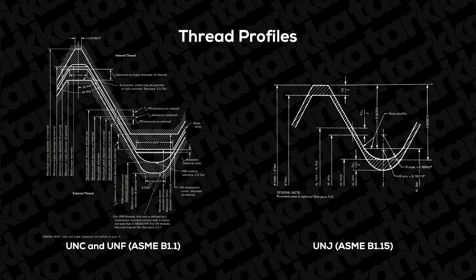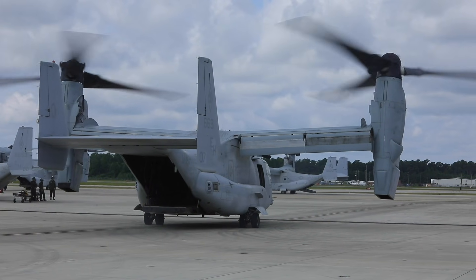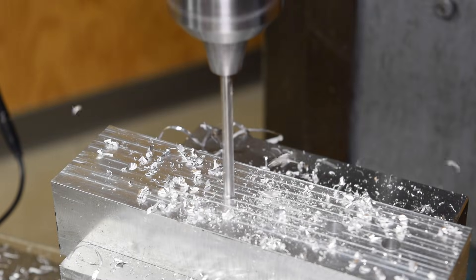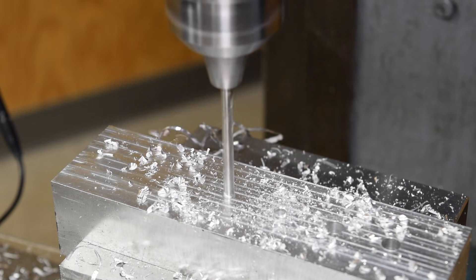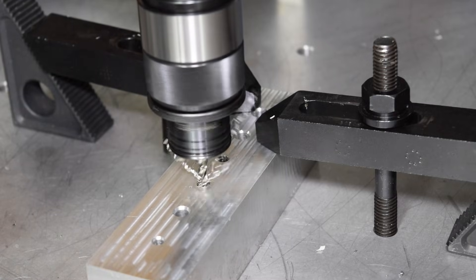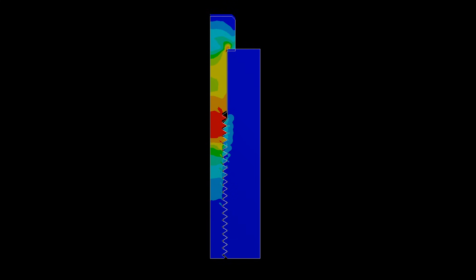A slight variation to the UNF and UNC standards is the J-type thread. Instead of the root of the external thread being a sharp V, the J thread has a prescribed root radius. The radius helps improve fatigue performance for cyclically loaded screws, and you typically only see this type of thread in aerospace. When designing tapped holes, you need to have enough thread engagement to allow the bolt to be fully tightened to its tensile limit. For threads in most metals, a thread engagement length of around two times the nominal size of the screw is sufficient. An interesting nuance of threaded holes is that they don't share the tensile load evenly along their length. In this FEA, we're simulating tightening a steel screw into an aluminum tapped hole, and you can see that the first few threads do almost all the work. Once you get beyond about the eighth thread, there is almost no load being carried. Hence, there is little benefit to additional thread engagement, and it simply adds to the assembly time.